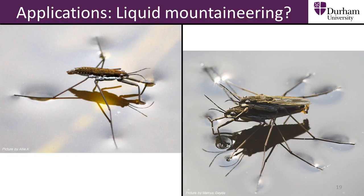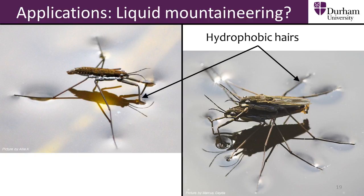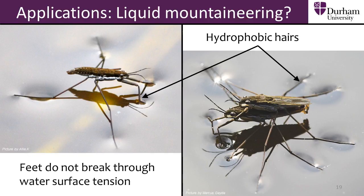The water strider bug has evolved with tiny hydrophobic hairs all over its body, which prevents the bug from sinking and allows it to stride across the surface of the water. In a recent online video, a group of men attempted to run on water in the fictitious sport of liquid mountaineering — the video was an advert for a shoe with a superhydrophobic waterproof coating.